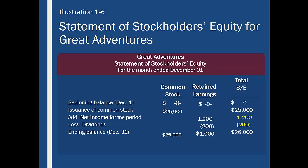Here's a statement of stockholders' equity. This basically shows: did anybody invest in my company? If it's brand new, then nobody has. But if $25,000 comes in from issuing stock, that shows up. Retained earnings is net income that I've retained over the year — so if we made $1,200 and paid $200 in dividends, we only have $1,000 left. We total that up: here's the stock, the net income, the dividends paid out, and that's the ending balance.